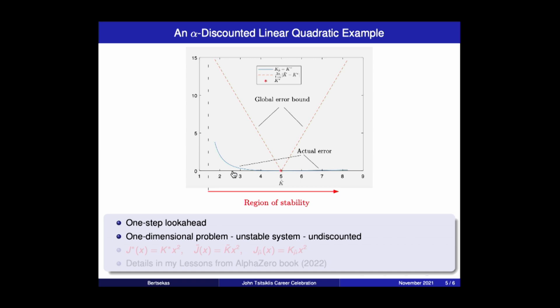Moreover, there are some nuances to this error bound. For example, the bound on the right is much better than the bound on the left. And if you study Newton's method, you will see why this is true. And you will also see here this asymptote, which is the region of stability. If your approximation error is on this side of this stability threshold, then no matter what you do, you're going to get an unstable system.